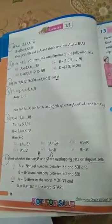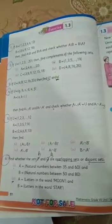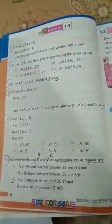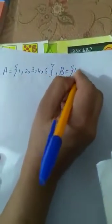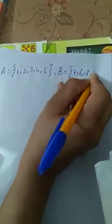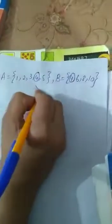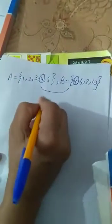For example, A is equal to 1, 2, 3, 4, 5 and B is equal to 4, 6, 8, and 10. Let's see here, one element 4 is common. It means these are overlapping sets.